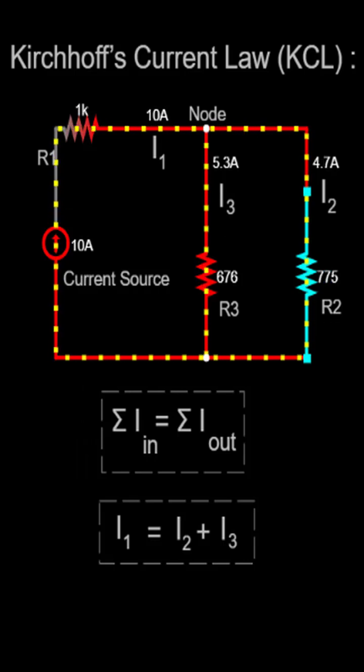By applying KCL at each node in a circuit, we can analyze and solve electrical circuits. It allows us to determine the unknown currents and voltages within the circuit, helping us understand how the circuit behaves.